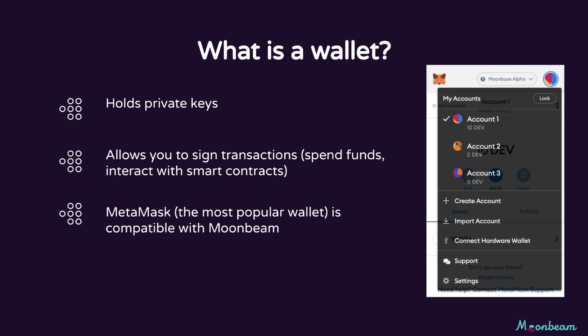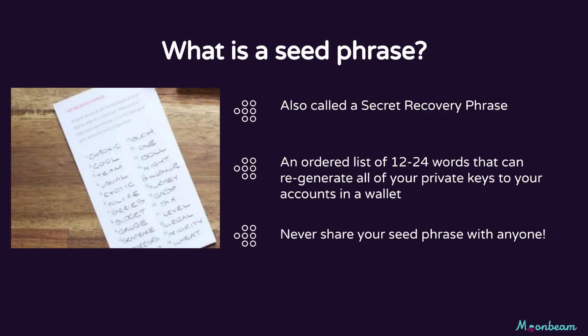If you create multiple accounts in Metamask, does that mean that you need to start writing down a bunch of different private keys? You can write down each and every private key corresponding to each of your accounts, but fortunately there is an easier way, and that's where seed phrases come in. A seed phrase, also known as a secret recovery phrase, is an ordered list of 12 to 24 words that automatically generate all of the private keys to your accounts in a wallet.